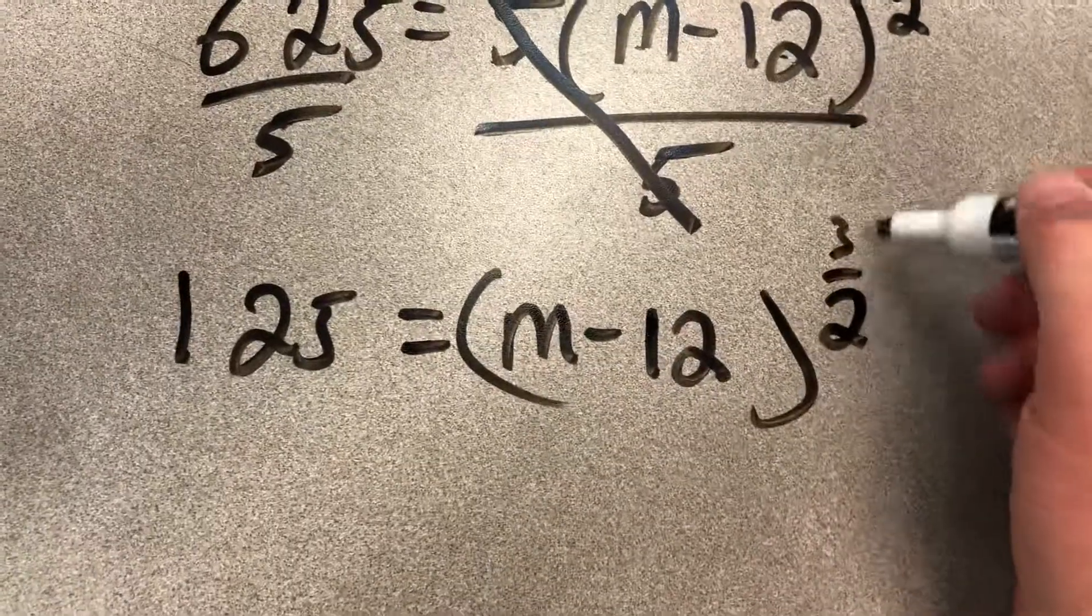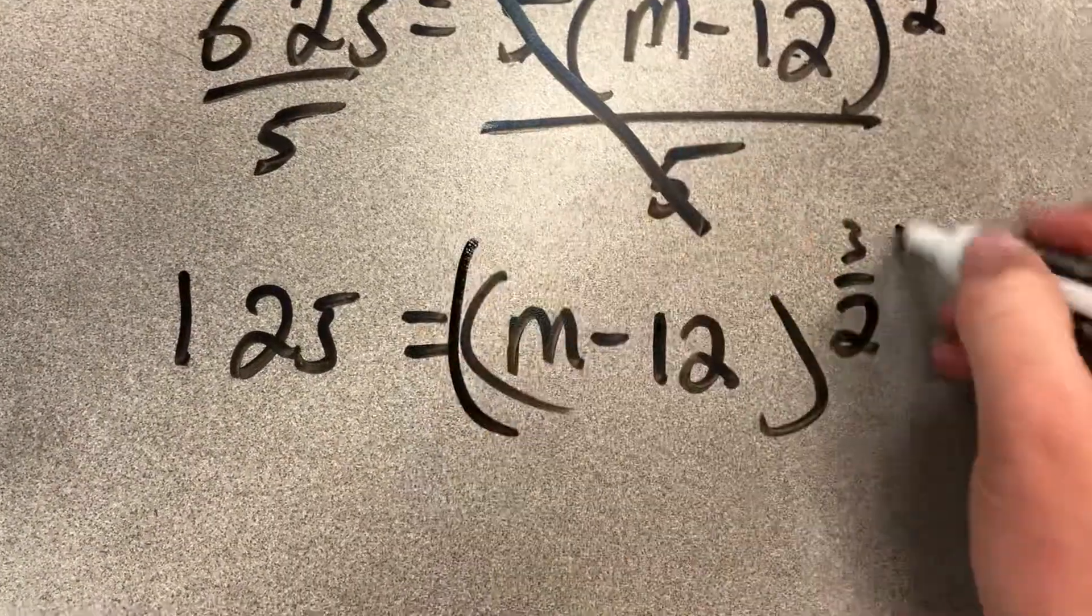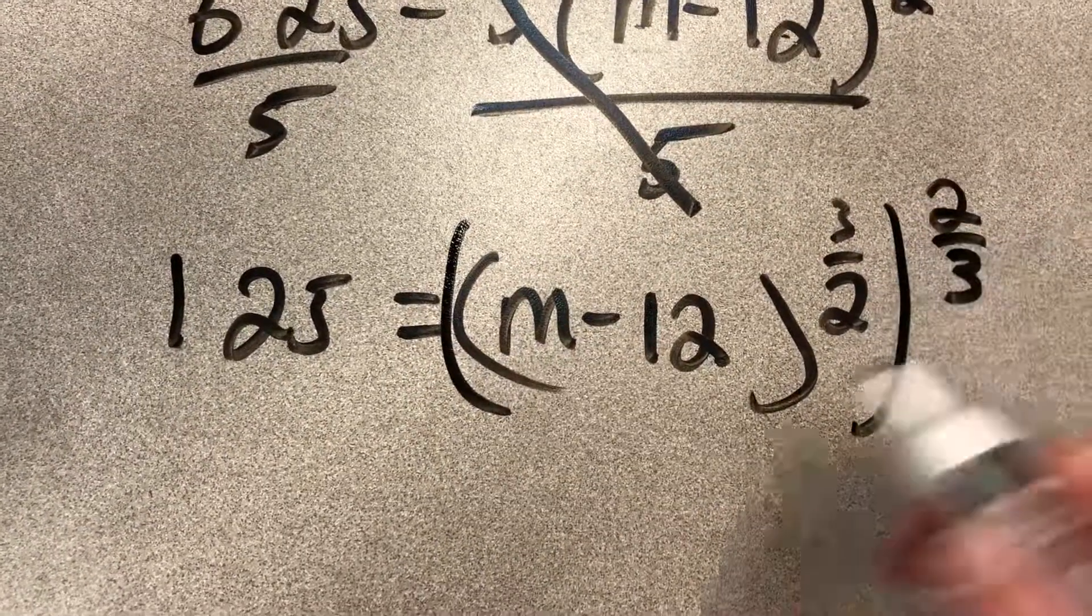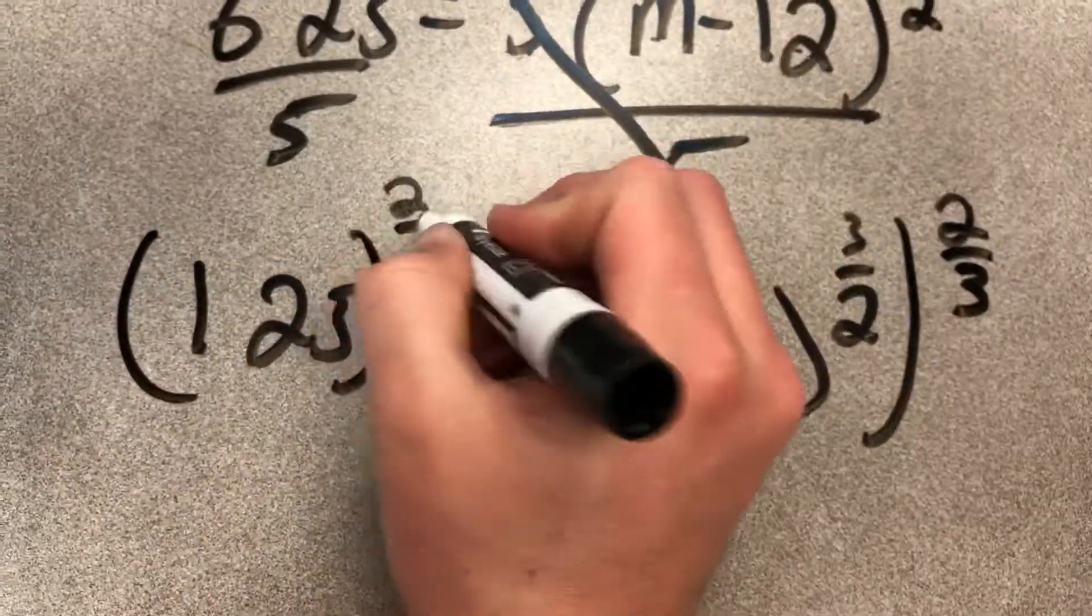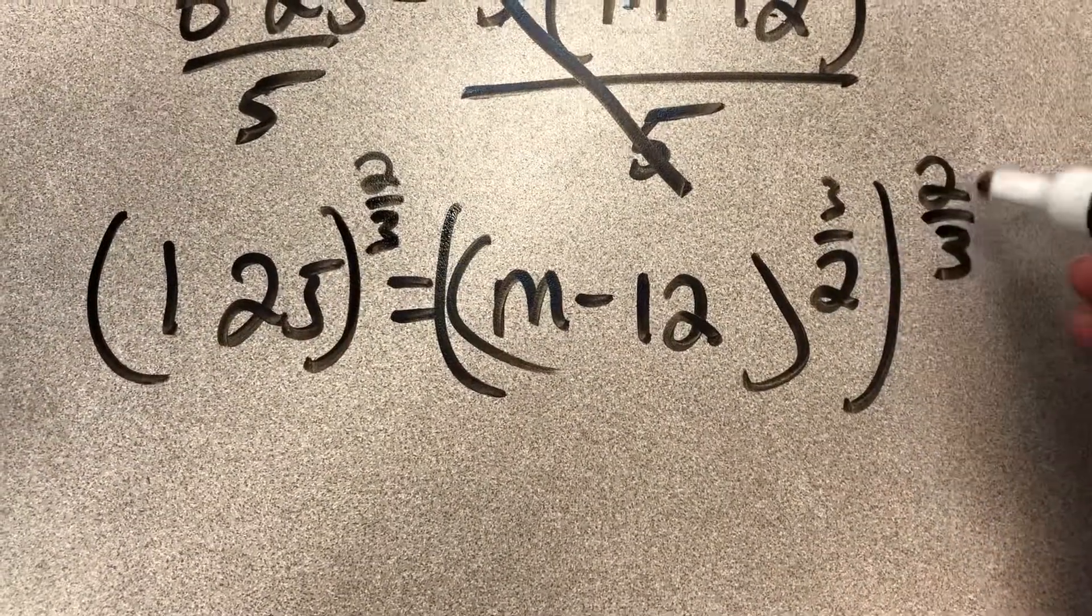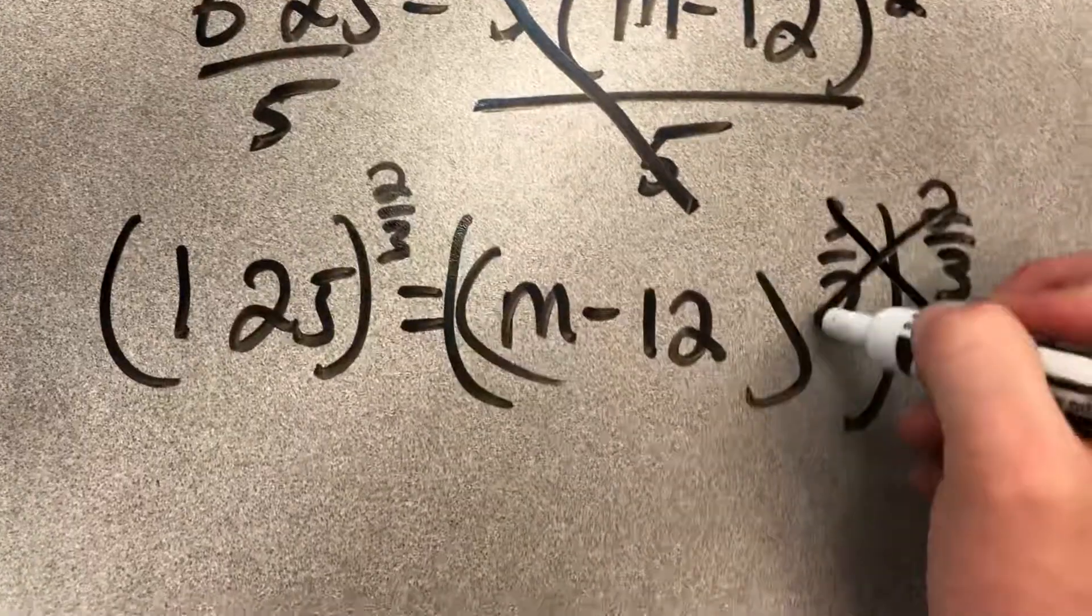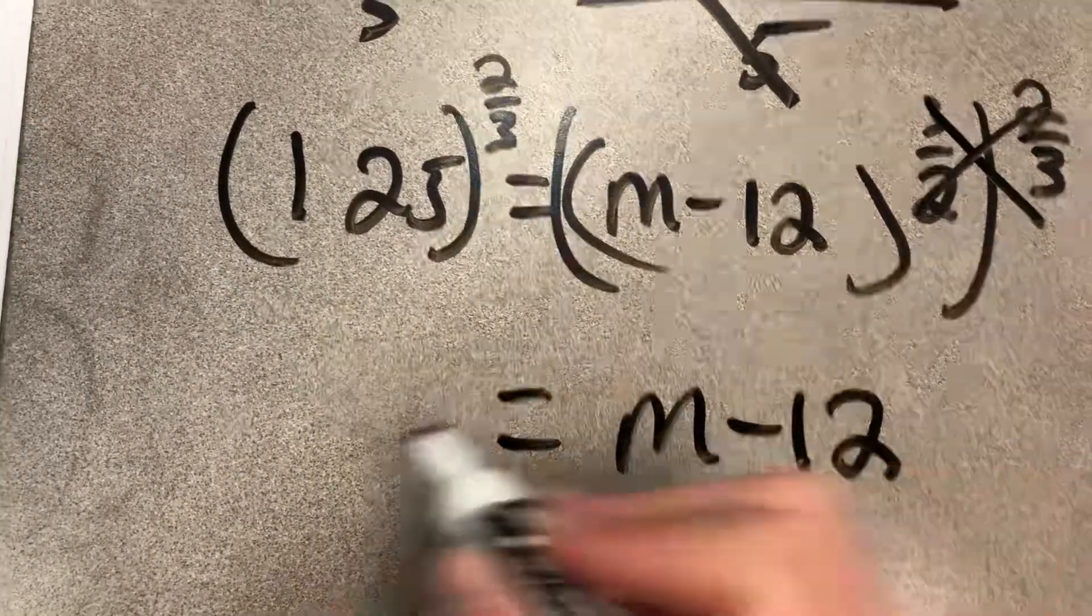Remember, that negative 12 is trapped by this exponent, so we're going to raise both sides to the reciprocal. We're going to take whatever exponent, flip it and use it on both sides. And so that frees up the m minus 12.